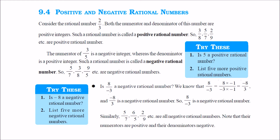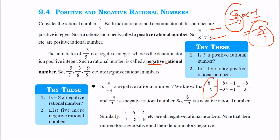Positive and negative rational numbers. Positive rational numbers are those rational numbers which have numerator positive and denominator positive. Negative rational numbers are those numbers which have numerator negative and denominator positive, because 8 by minus 3 is nothing but minus 8 by 3. So, minus 8 by 3 and 8 by minus 3 are equal. The numerator is minus, denominator is plus, so this is a negative rational number.